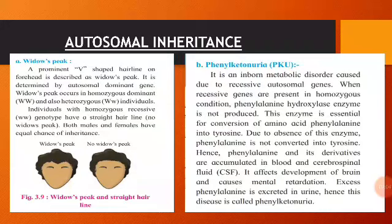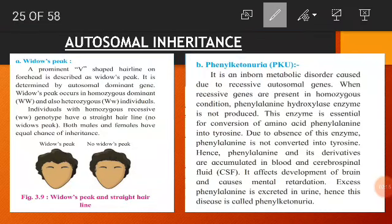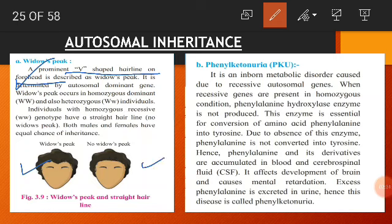Now we will see in detail about autosomal dominant and autosomal recessive traits. The first example of a dominant trait is widow's peak — a prominent V-shaped hairline on the forehead, described as widow's peak — as opposed to a straight hairline. It is determined by an autosomal dominant gene.